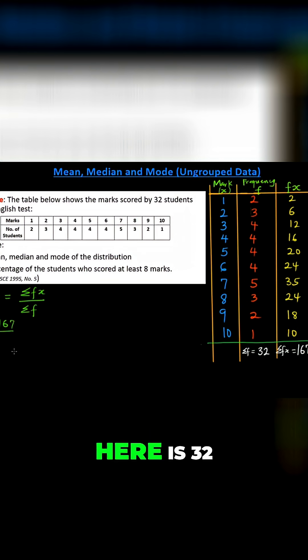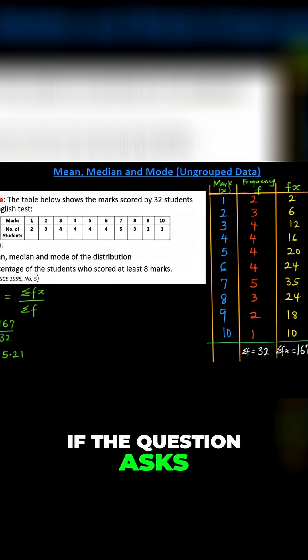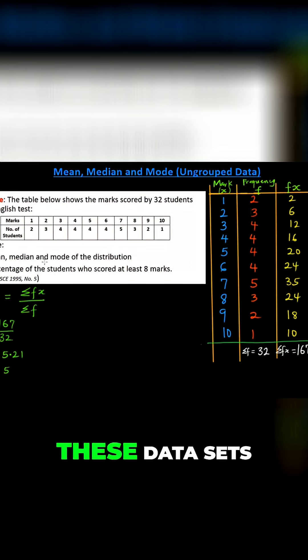that we have here is 32. So doing this, X̄, which is the mean, gives us 5.21. If we need to approximate, if the question asks us to, we can. So the mean is therefore approximated as 5. That is the mean of this dataset, the average value of these data.